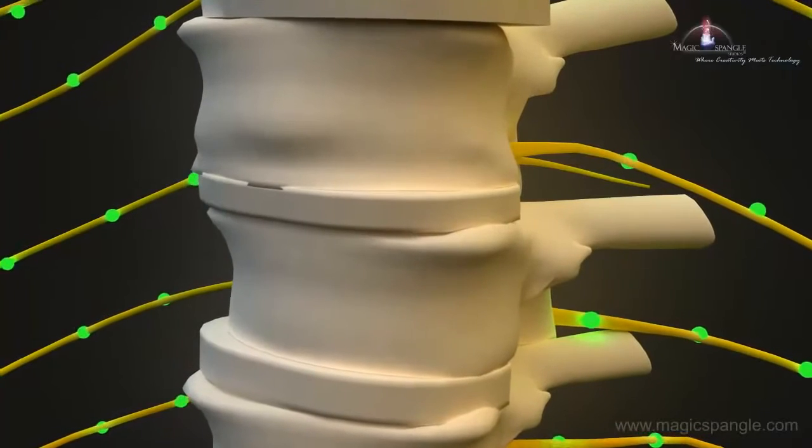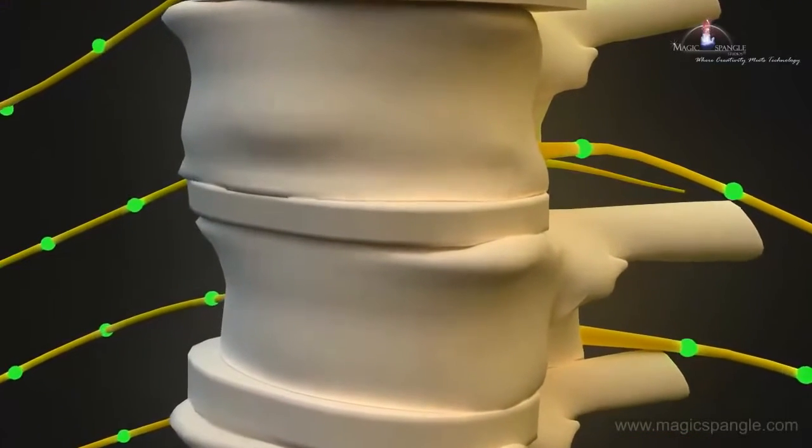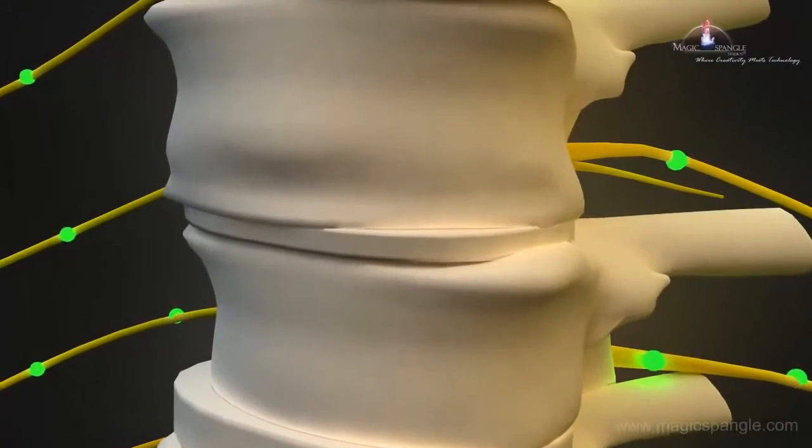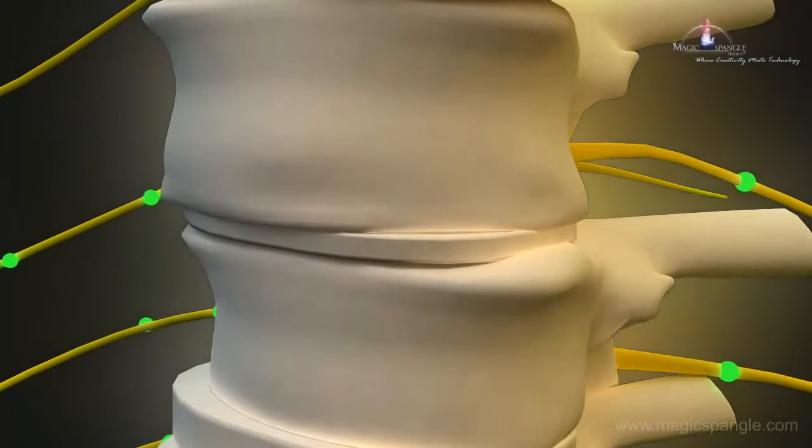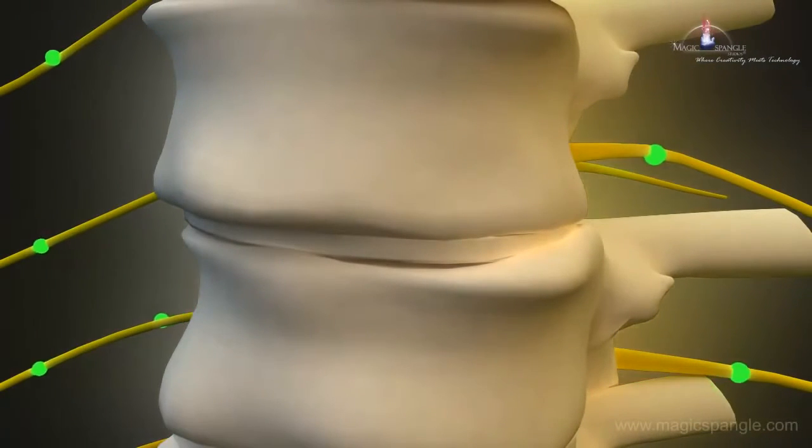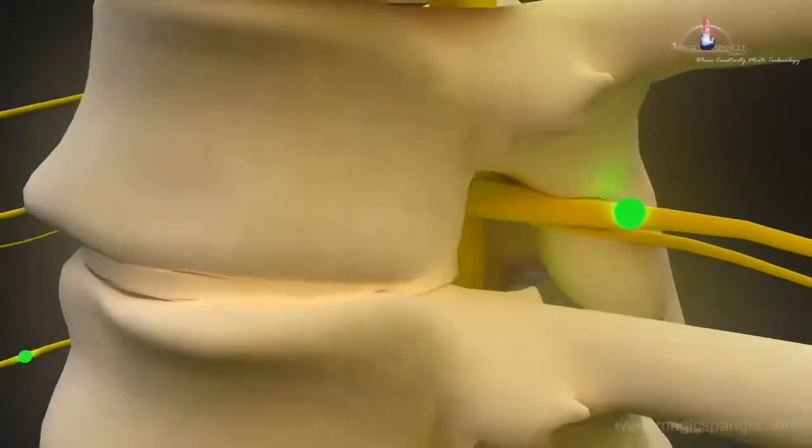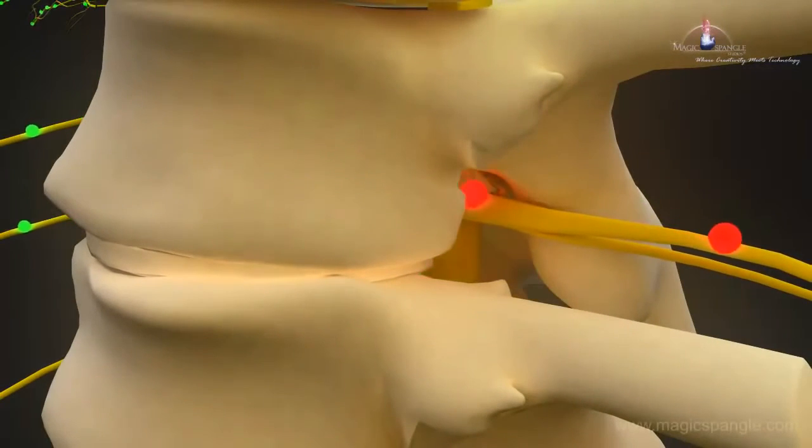And when a subluxation is left untreated, your spine begins to decay, your discs begin to thin and wear down, and your vertebrae start to deform and degenerate, leading to the development of these spurs, or osteophytes, which then further compress and damage your nerves.